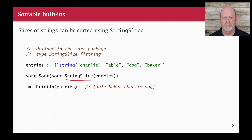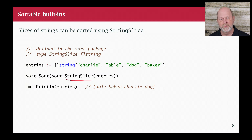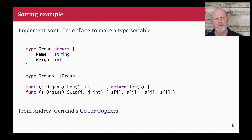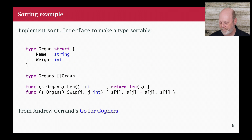Here's an example of using sort. The sort package has a type called stringSlice, which is just a way to cast a slice of strings into something that has those three methods built in for strings. I can create a slice of strings in some arbitrary order, turn them into sort.StringSlice — that's essentially a typecast — then call sort.Sort, and they come out in alphabetical order.